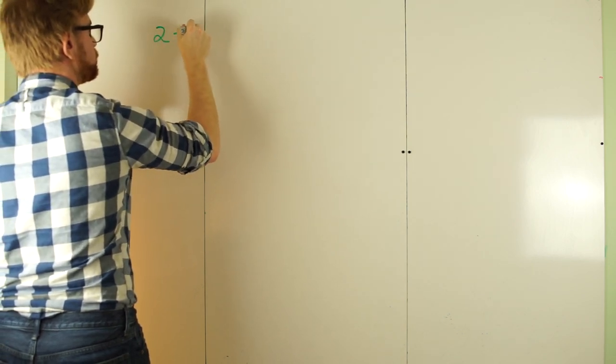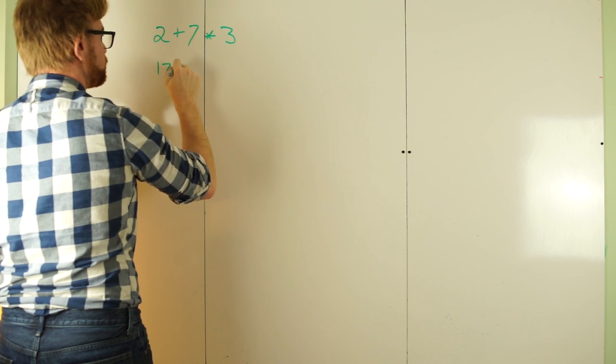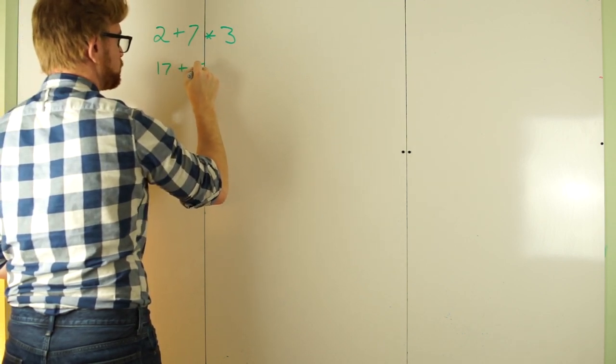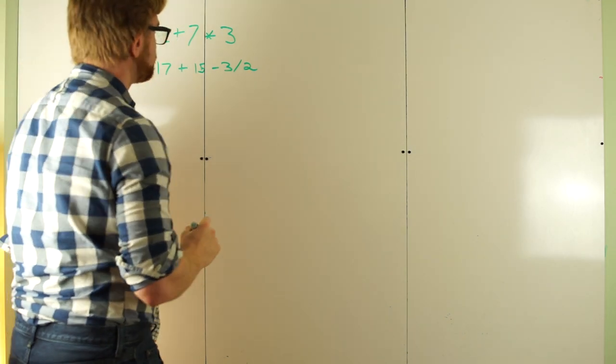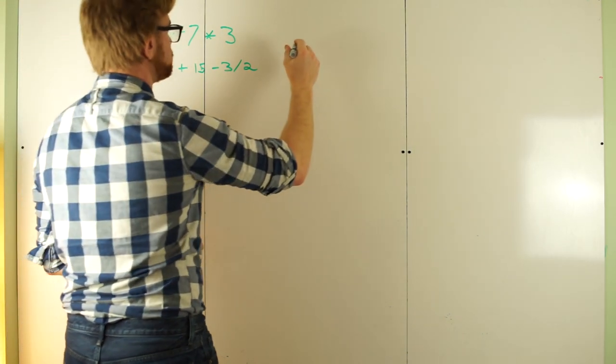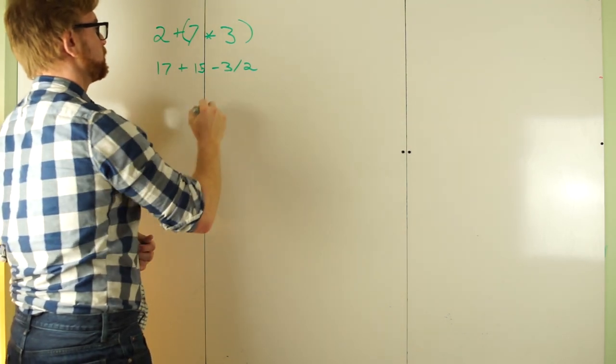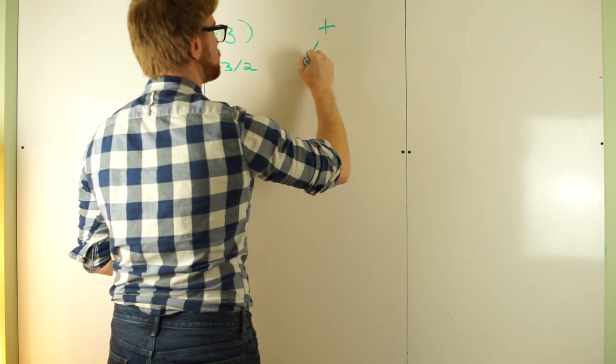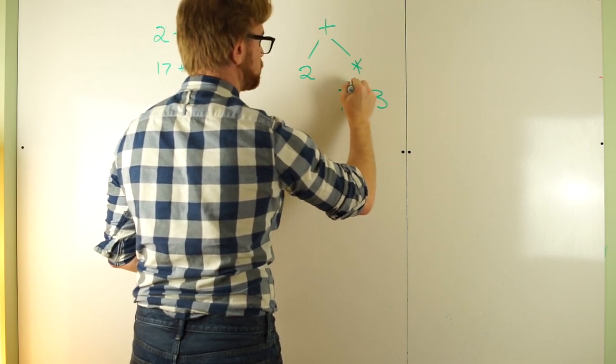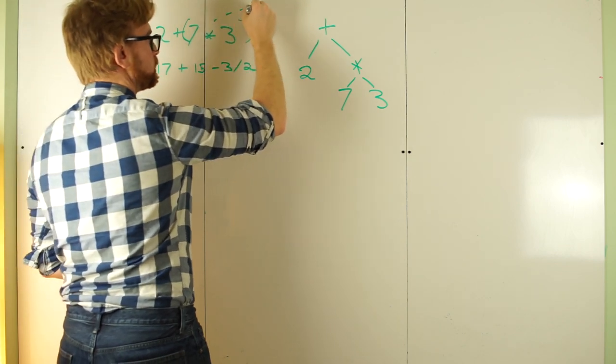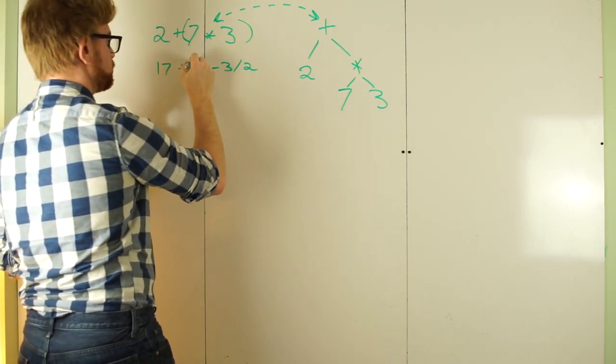I'd like to start by explaining why we even want to use S expressions in the first place and motivate why this is the default choice. To start I'm going to write some expressions in normal infix notation and describe how we can compute them down to a value in a systematic way. For example we might have 2 plus 7 times 3. We might also have 17 plus 15 minus 3 divided by 2. Using the rules of mathematics PEMDAS, so parentheses, exponentiation, multiplication, division, and then subtraction, I could represent 2 plus 7 times 3 using this tree over here on the right, where I have plus and then to the left of it is 2 and then to the right is this sort of sub node 7 times 3.